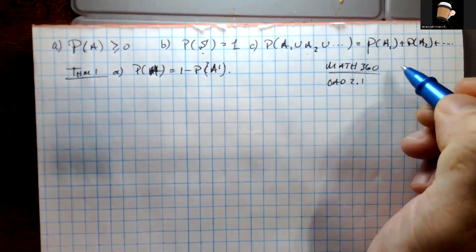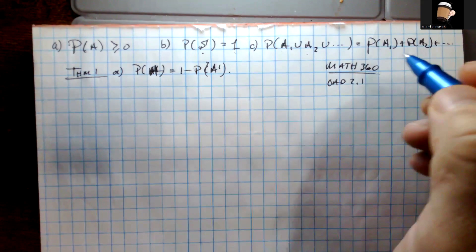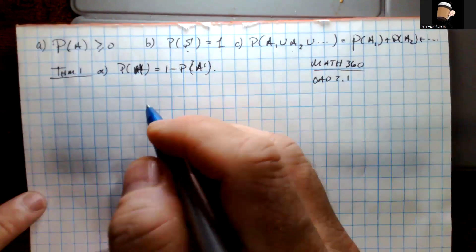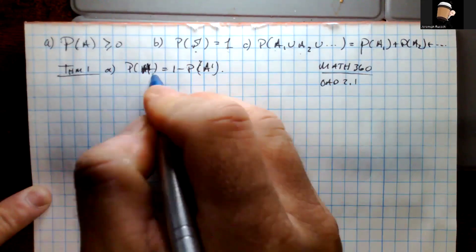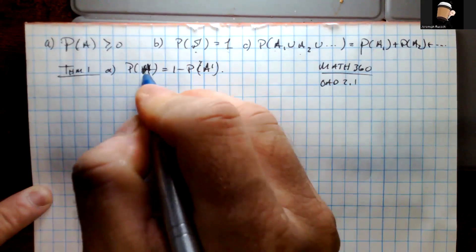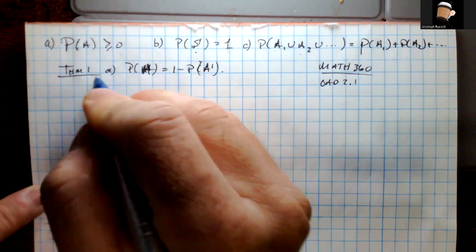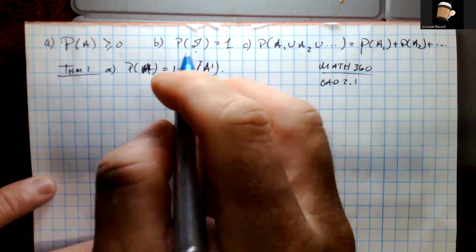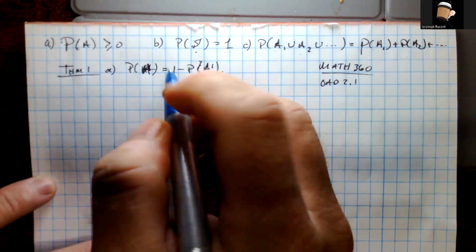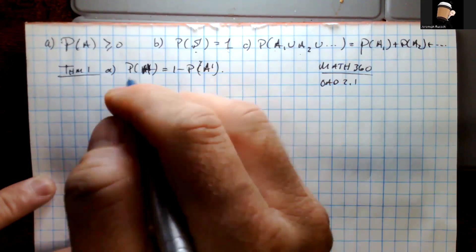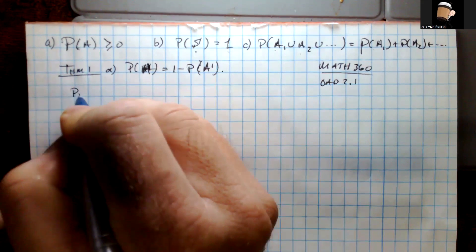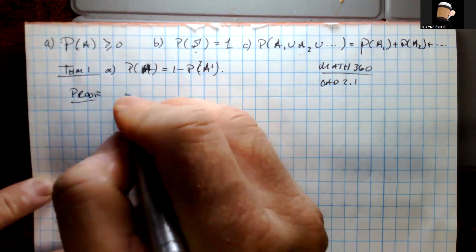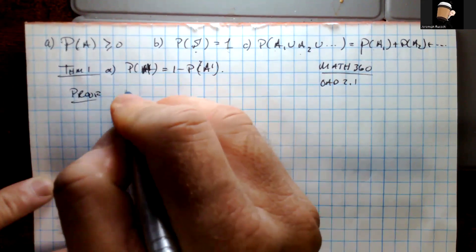Those are really helpful and we'll use them multiple times during these proofs. So this is our statement — Theorem 1a: the probability of A is equal to one minus the probability of the complement of A. To prove this, I like this little proof — it's pretty cool.